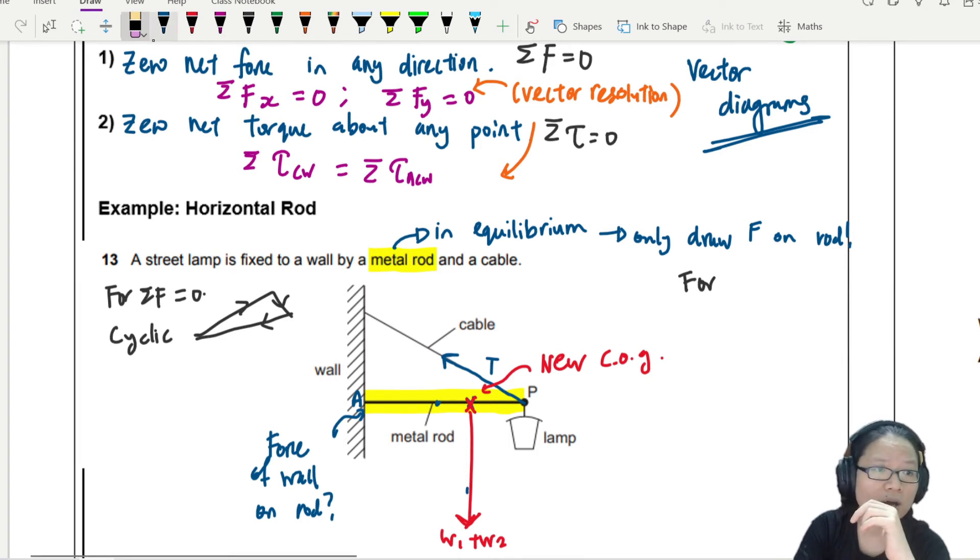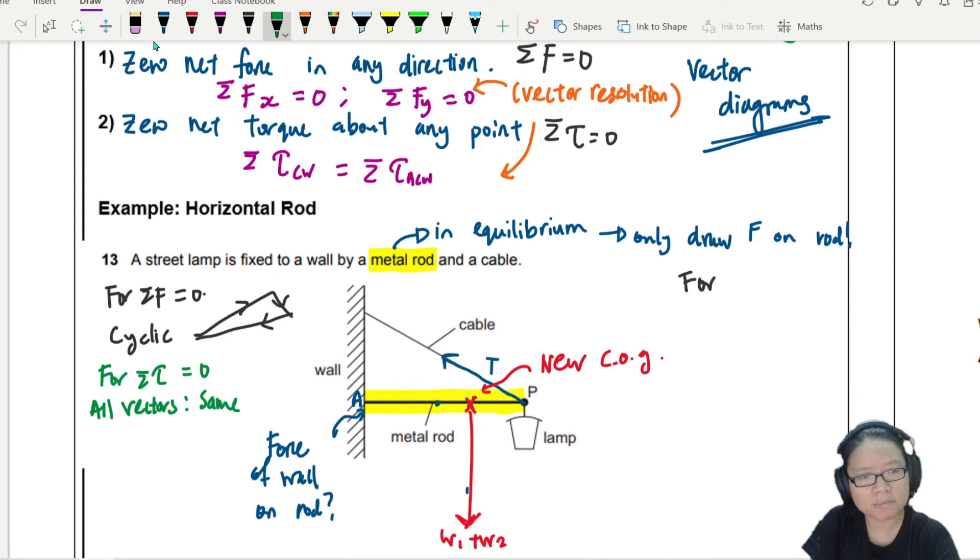And number two, I also expect them to have the same line of action. So for net torque to be zero. The all vectors. Must intersect. So how should I put this? All vectors will intersect at a common point.